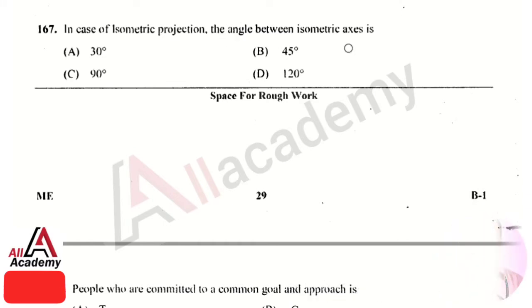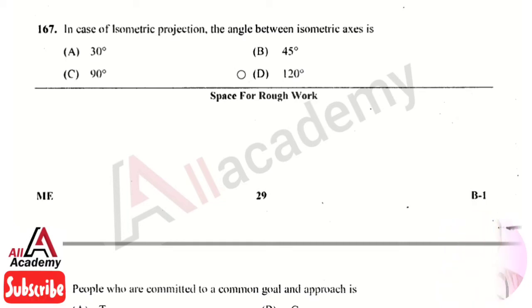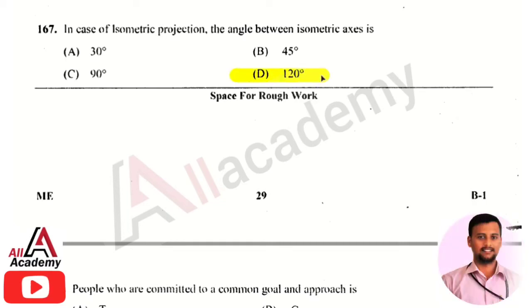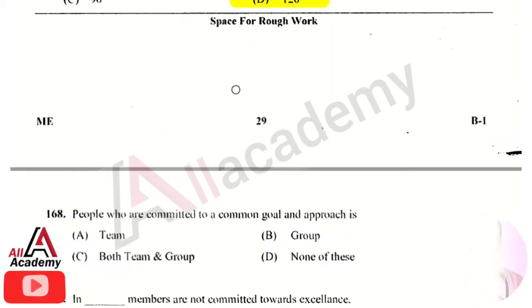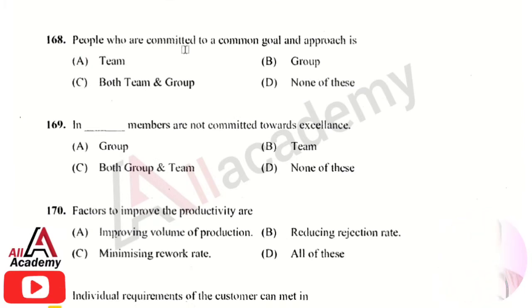The next question is: in the case of isometric projection, the angle between the isometric axes is? The right answer is option 4, that is 120 degrees.